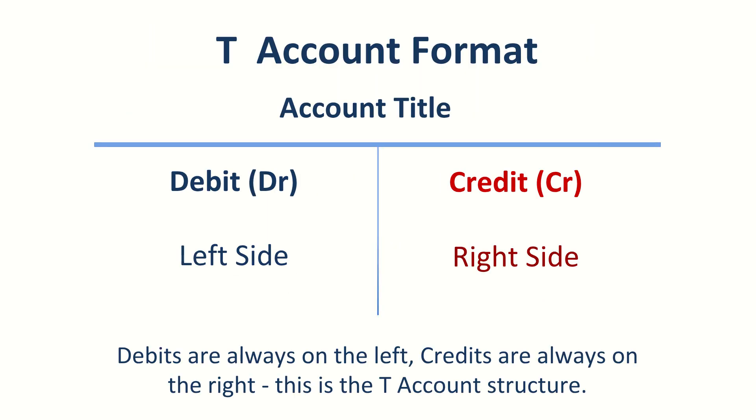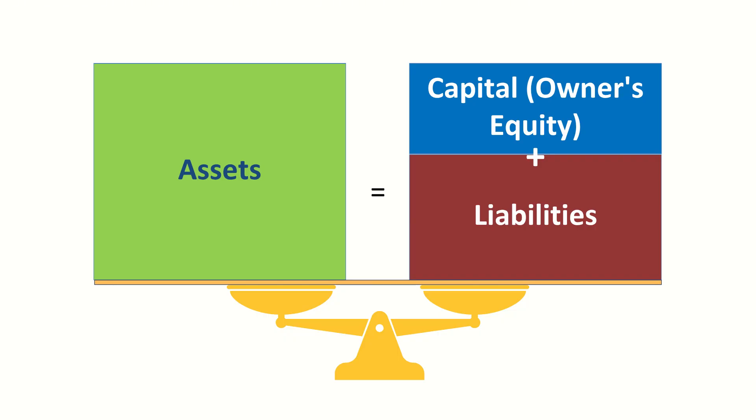A ledger account is shaped like a T. The left-hand side is for debits, the right-hand side for credits. Think of the debit side as what the business owns or spends, and the credit side as what the business owes or gives away. This keeps the accounting equation in balance: assets equals liabilities plus capital.